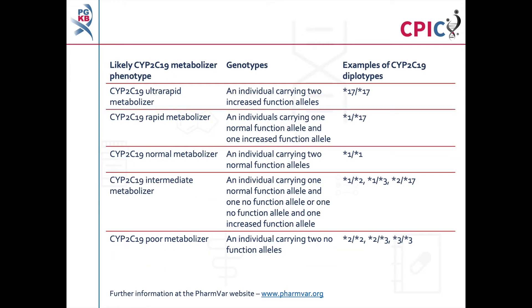There are currently over 30 defined alleles of CYP2C19, known as star alleles. Star alleles are characterized by their rate of function relative to the star 1 allele, which is designated as a normal function allele. Diplotypes of CYP2C19 star alleles can be assigned to a metabolizer phenotype as shown in this table and in table 1 of the guidelines. Note that as more evidence becomes available, new star alleles can be added and the functional definition of some star alleles may change.